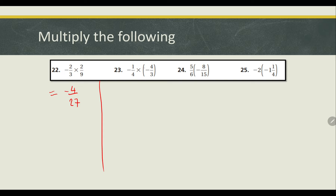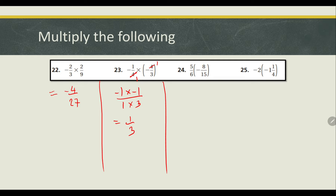Now let's go to question 23. If you take a look at it, 4 and 4 can simplify: this 4 will change to 1 and this 4 will change to 1. So we get negative 1 times negative 1 over 1 times 3, which is equal to 1 over 3. The reason it's positive is because negative times negative gives positive.